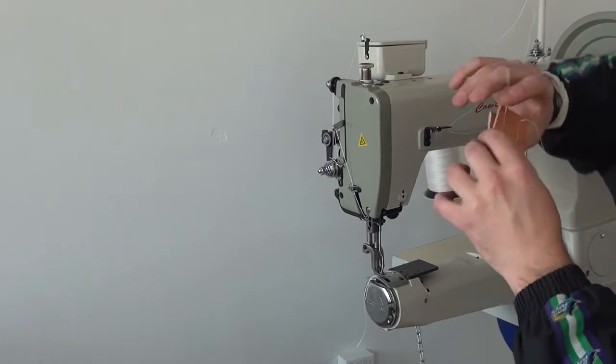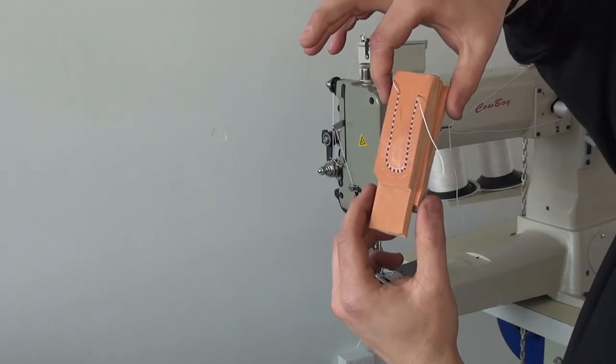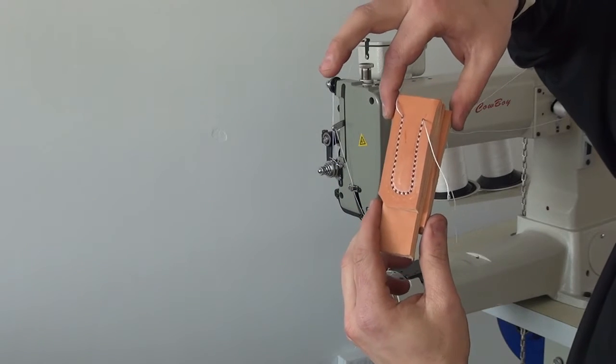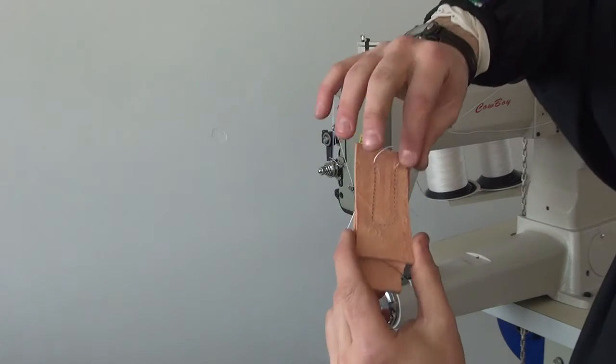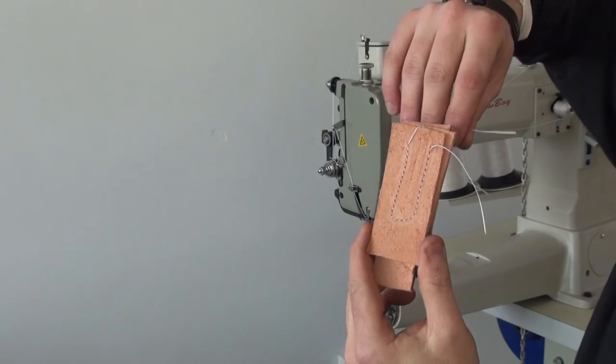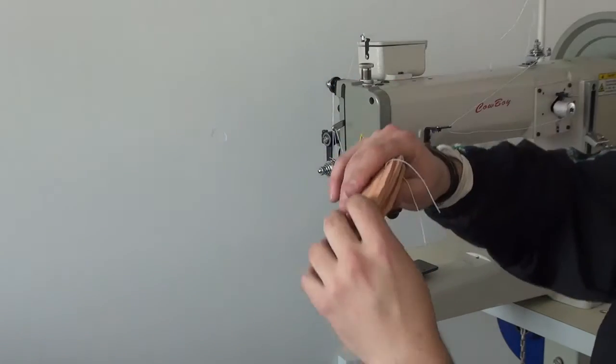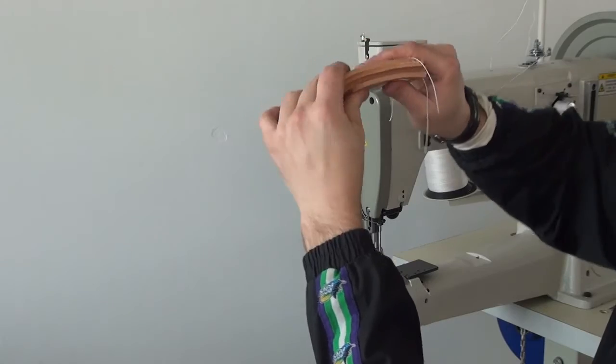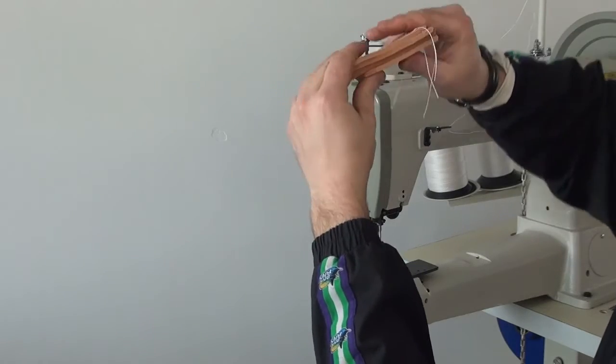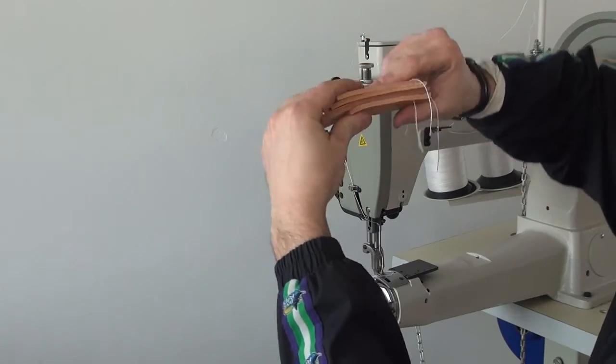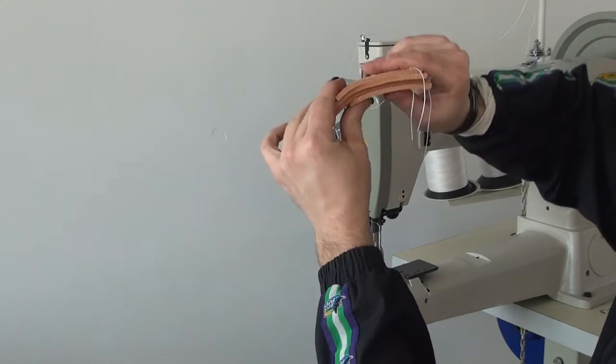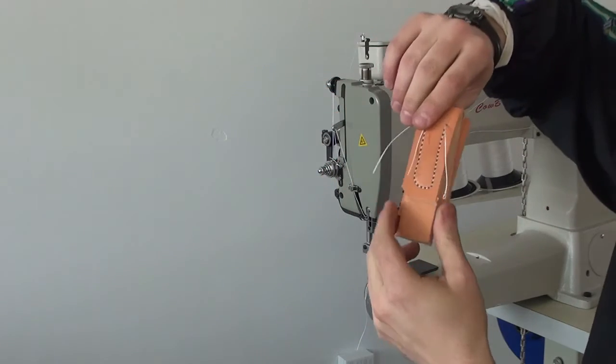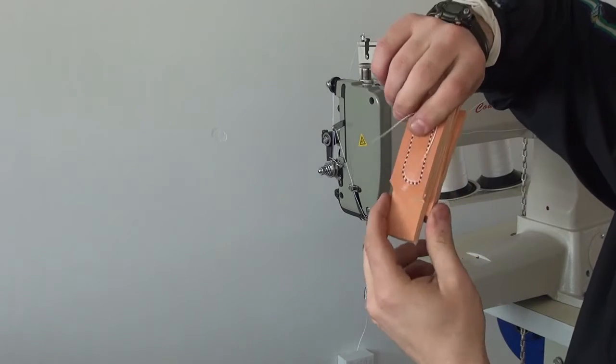And so you can see now how perfect the stitching is through four layers, again, of approximately 12 to 14 ounce saddle skirting leather. The stitching on the back side of the leather is also very even as well. If we were to take these four layers of leather and try to bend them, you can see that this is basically like a board, which is exactly what you're looking for when you're sewing heavy duty leather projects like this.